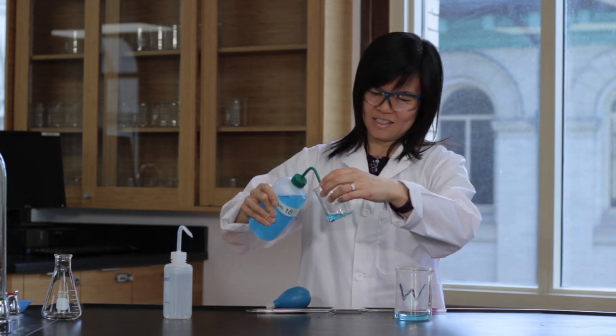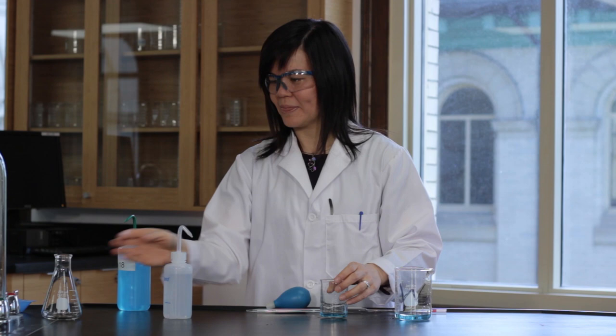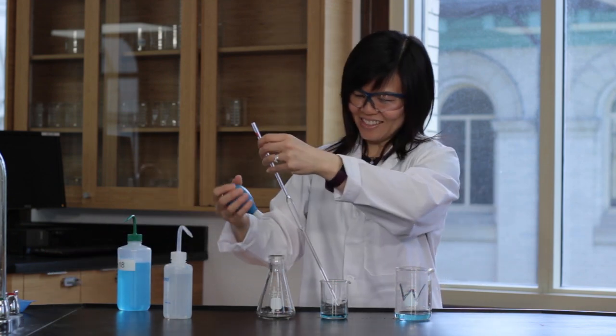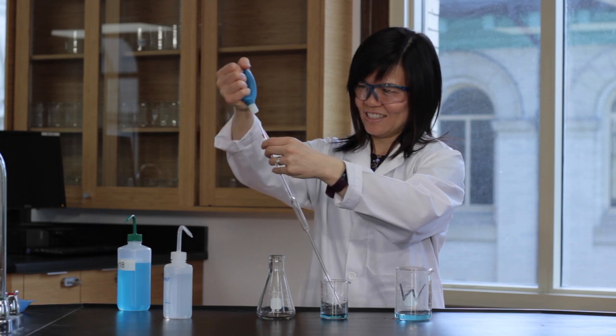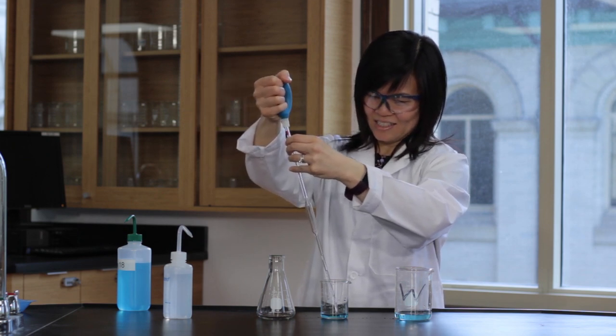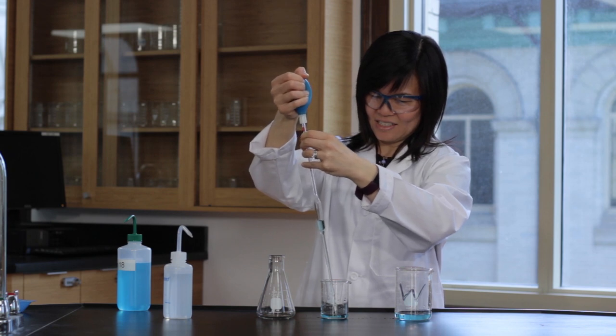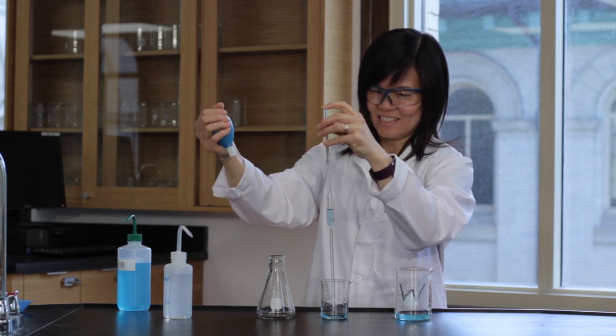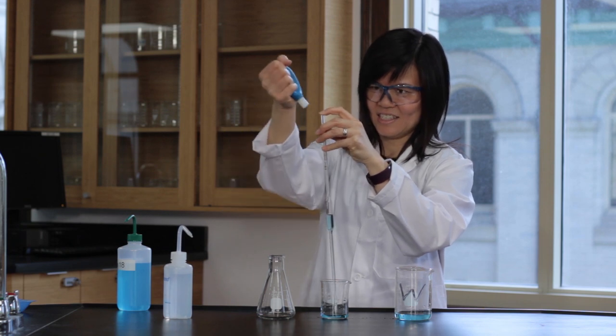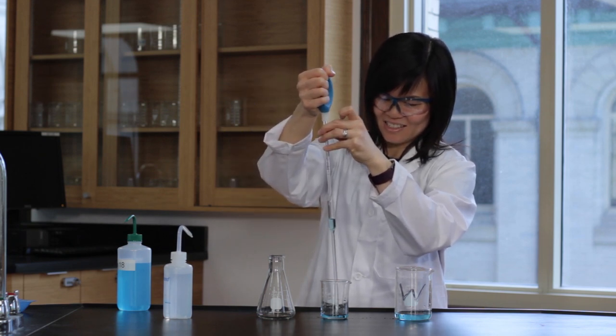Insert the pipette tip into the solution and draw in the solution until the liquid level is a couple of inches above the mark. Remove the bulb and quickly place your forefinger over the end of the pipette to prevent the solution from flowing out.